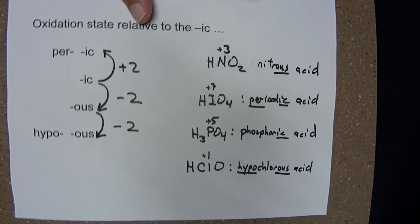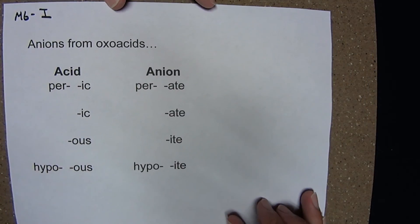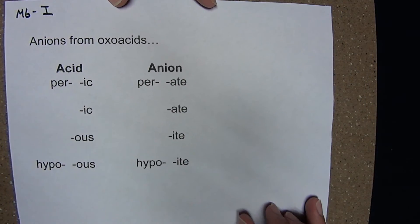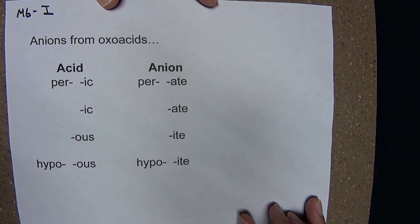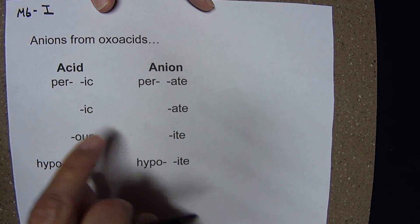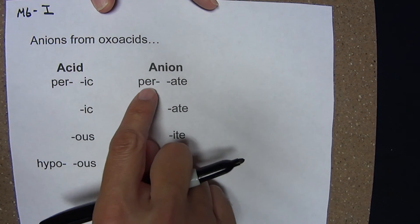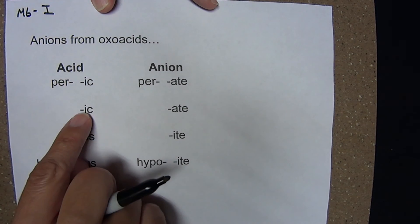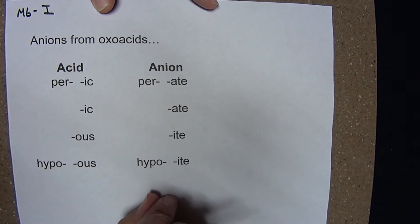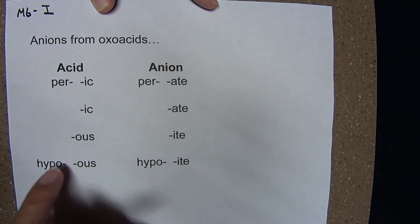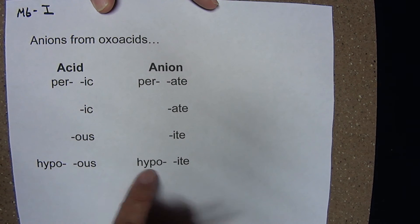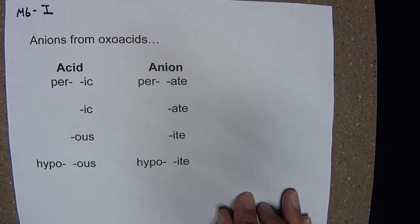If you're able to name these oxoacids, you can readily come up with the name for the daughter anion produced from that acid. The per-ic acid's daughter ion is the per-ate anion. The ic becomes the -ate. The -ous becomes the -ite. The hypo-ous becomes the hypo-ite.